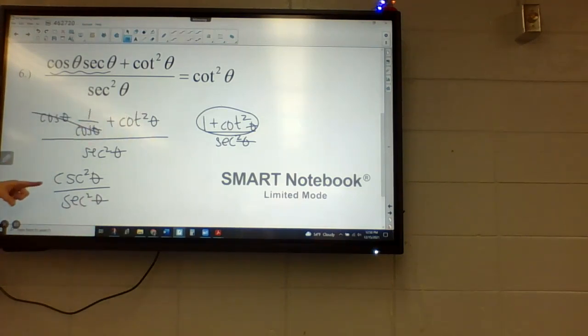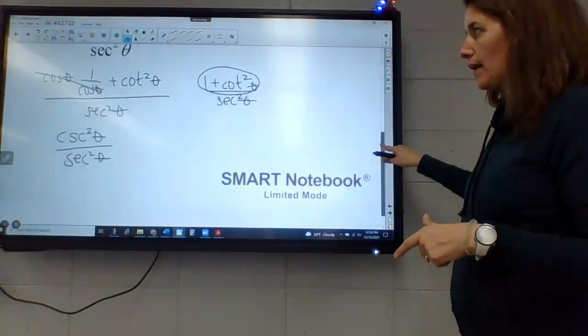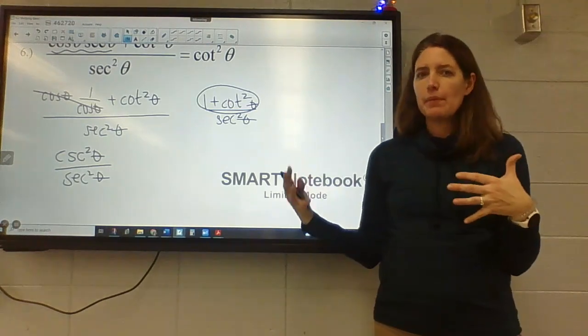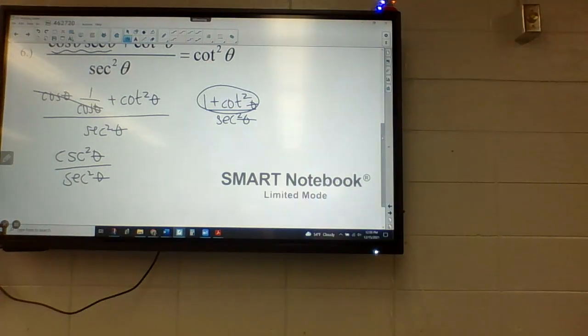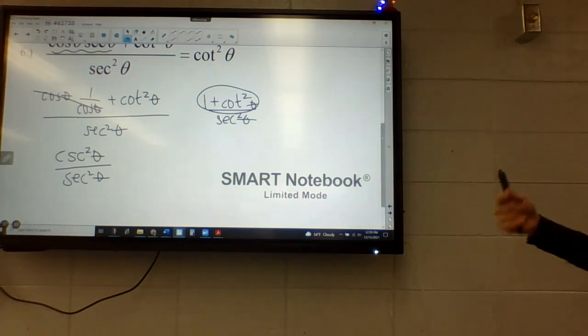So the top just became cosecant over secant. Now, obviously that doesn't match quite yet. I want it to be cotangent. And right now it probably feels a little strange to now go to the sine and cosine. But I think that's where we need to go.